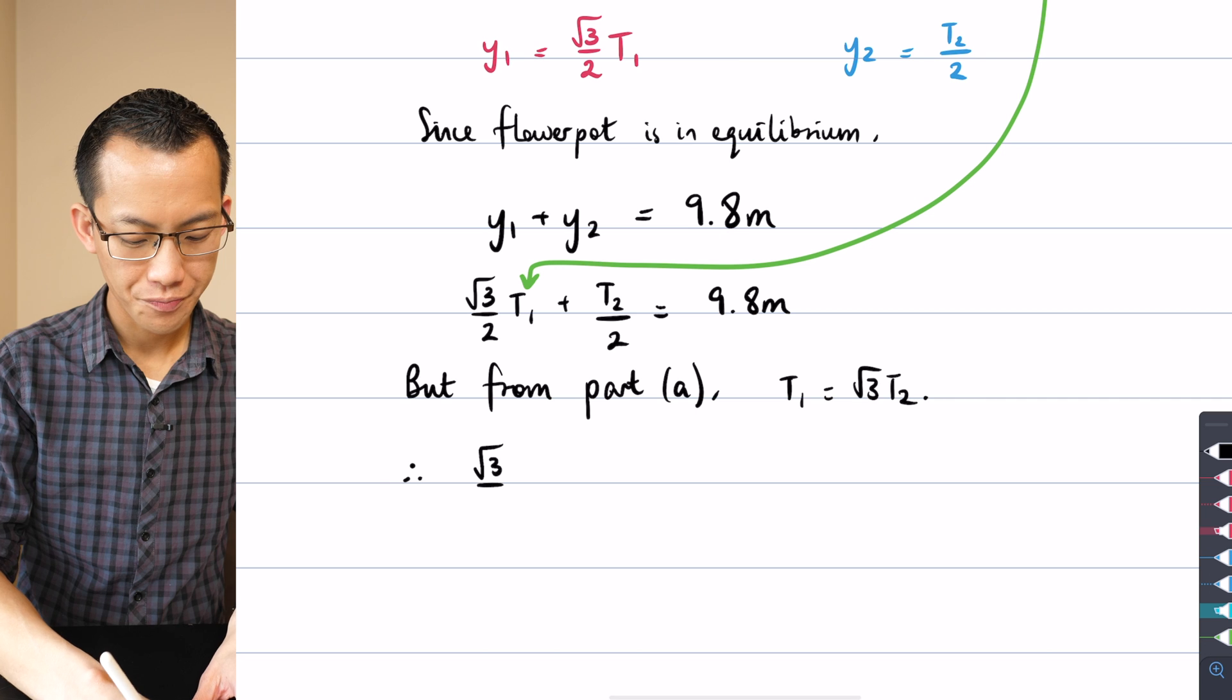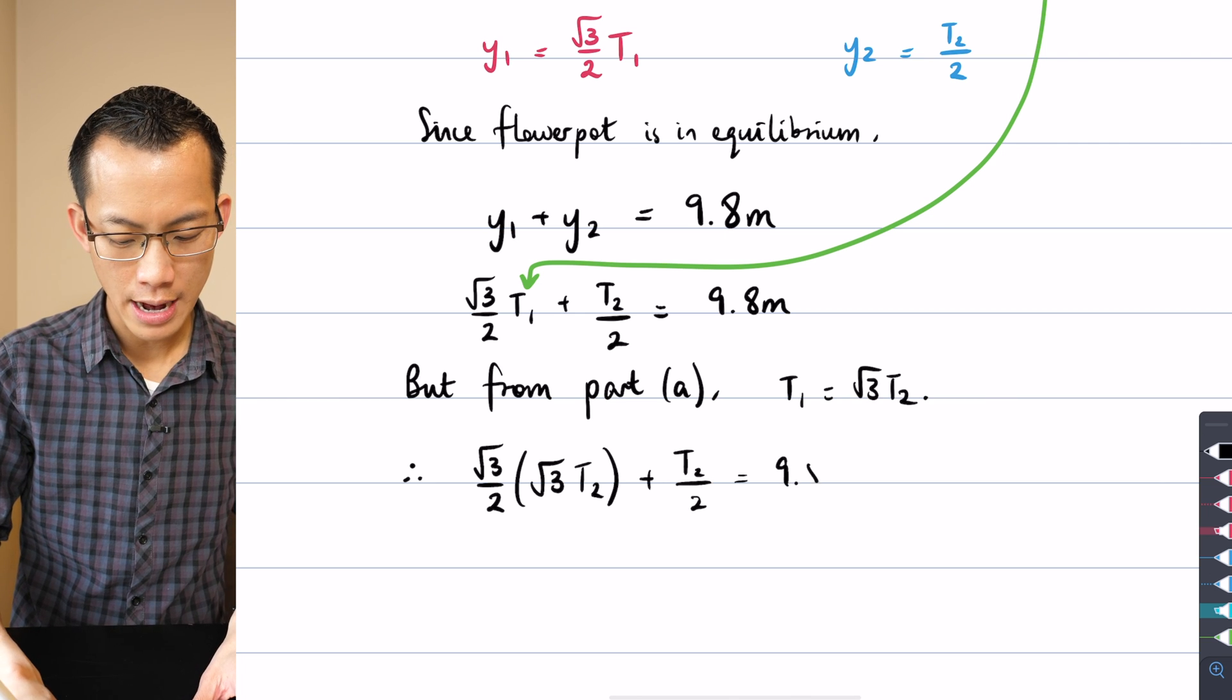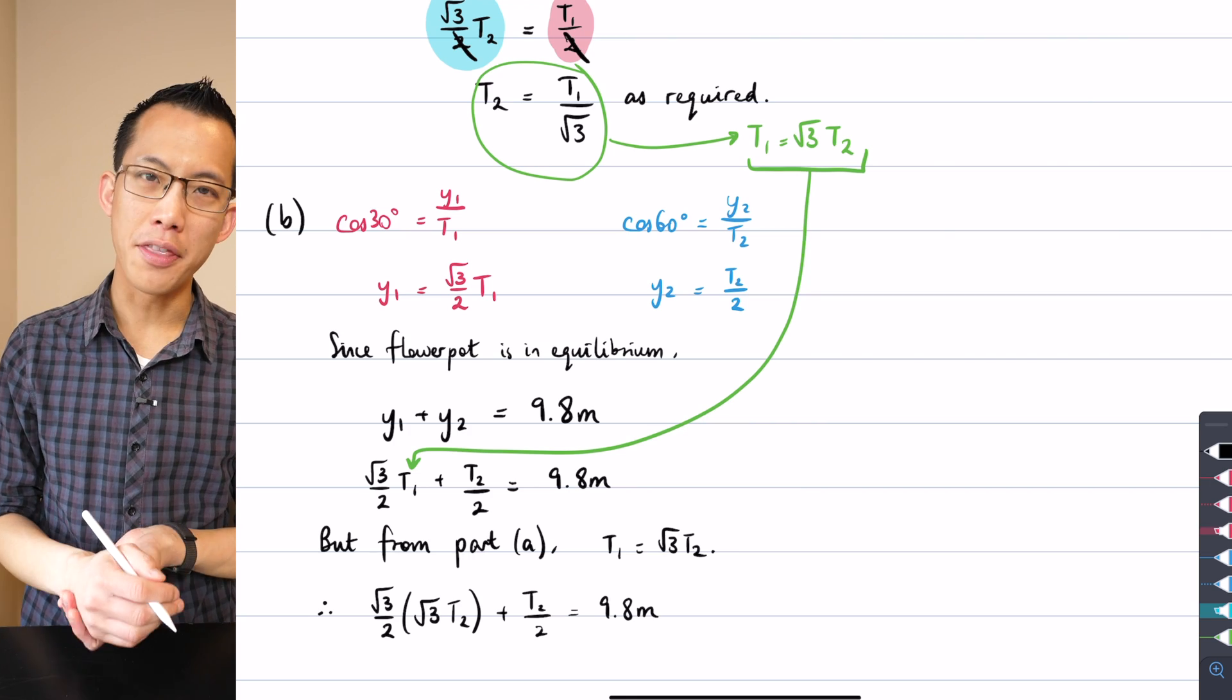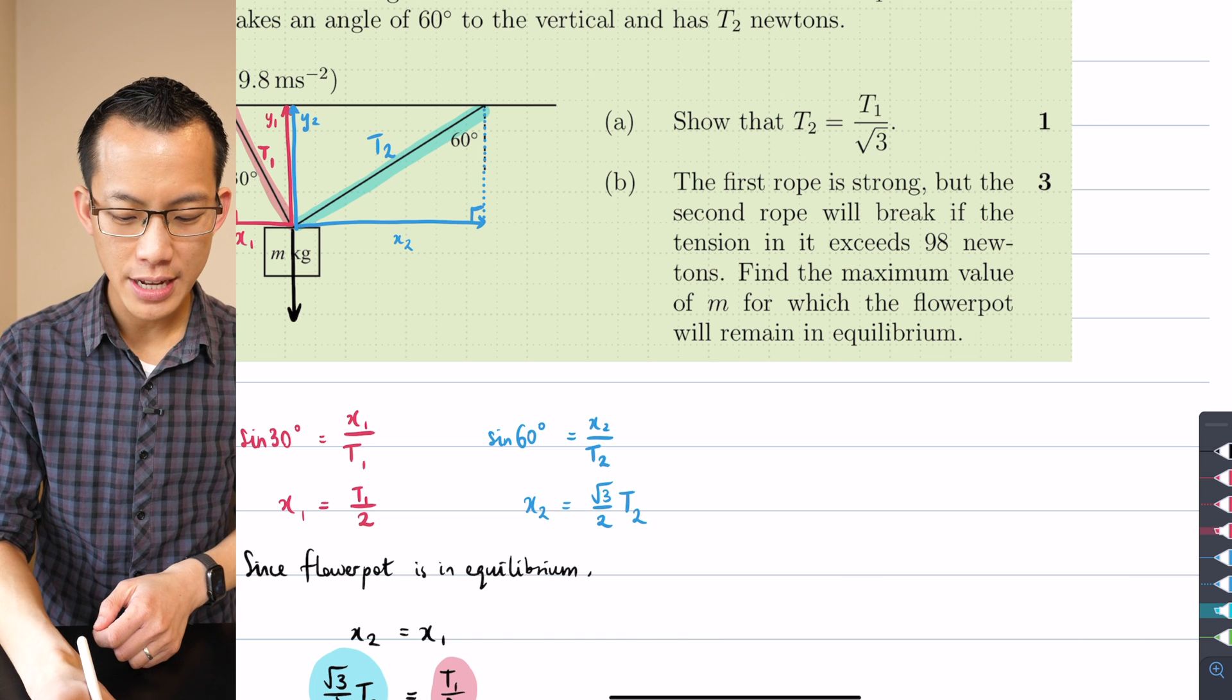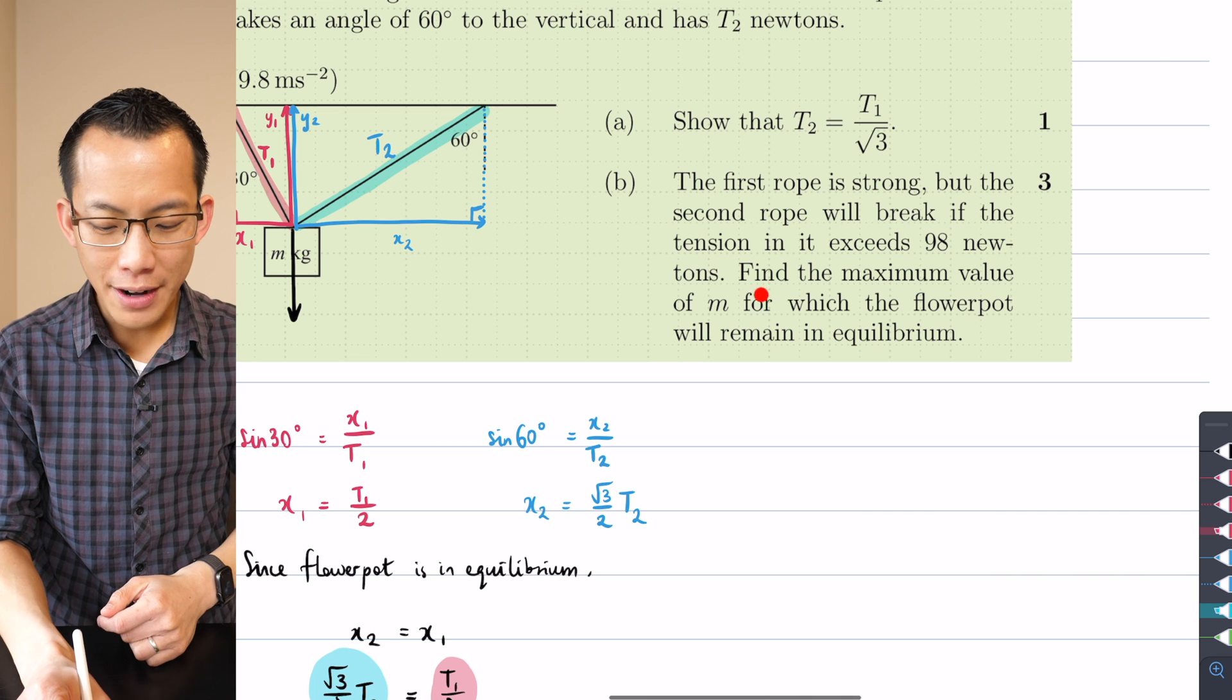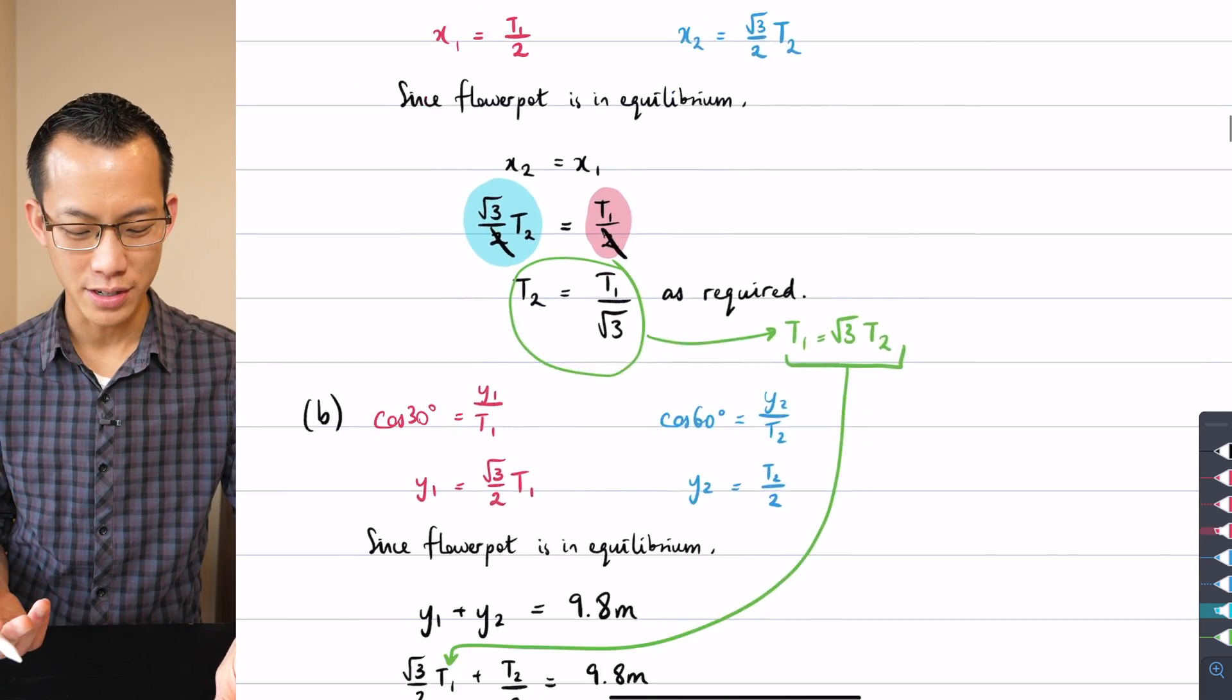Alright, let's do a substitution now. So I've got (√3/2) times √3 times T2 plus T2/2 = 9.8 times the mass. Now at this point, what am I trying to solve for? I've got two unknowns - T2 and the mass. Have a look back at the question because it will guide us. It says the second rope will break if the tension in it exceeds 98 newtons, so T2 can go up to 98, and if I go past that then I'm in trouble. I'm trying to find the maximum value of m, so m's our unknown. I still want m to be in our equation, so it's going to be a substitution for T2 that I'm going to do.